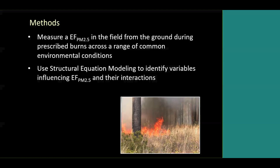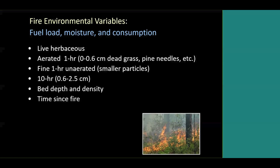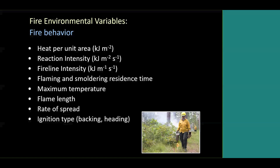Our methods were basically to measure PM 2.5 emission factors in the field from the ground — so we don't have towers or airplanes — over a range of common environmental conditions, and then to use structural equation modeling to identify variables that seem to be correlated with emission factors and their interactions. Variables measured included fuel load, moisture, and consumption variables: how much was live versus dead, one-hour versus ten-hour fuels, semi-decomposed duff versus aerated fuels, bed depth and density, and time since fire, ranging from one to four years. For fire behavior, we measured heat per unit area, reaction intensity, fire line intensity, and smoldering and flaming residence times.